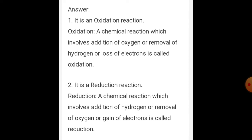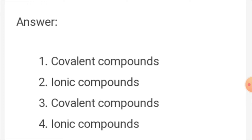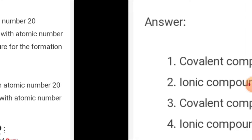Question number 11: identify the compounds as ionic, covalent, or coordinate based on the given characteristics. Characteristics: soluble in non-polar solvents; undergoes rapid or instantaneous reactions; non-conductors of electricity; solids at room temperature. Answer: soluble in non-polar solvents — covalent bond. Undergoes rapid/instantaneous reactions — ionic compound. Non-conductors of electricity — covalent bond. Solids at room temperature — ionic compound.